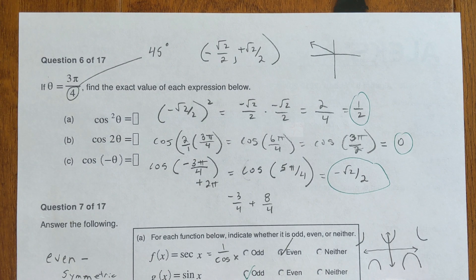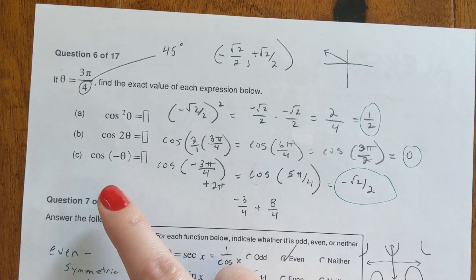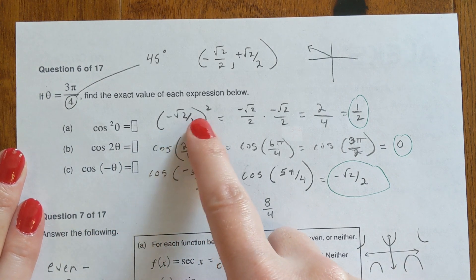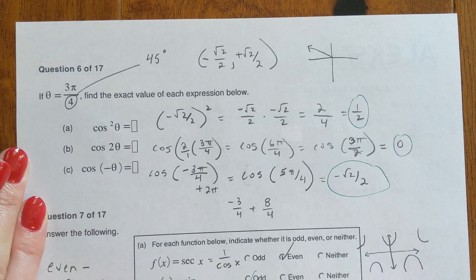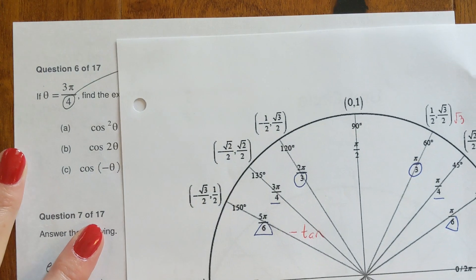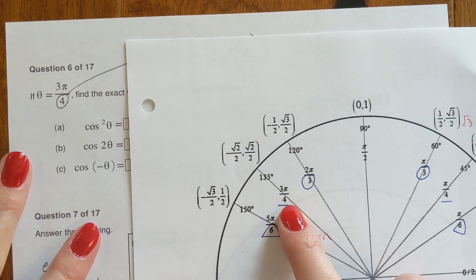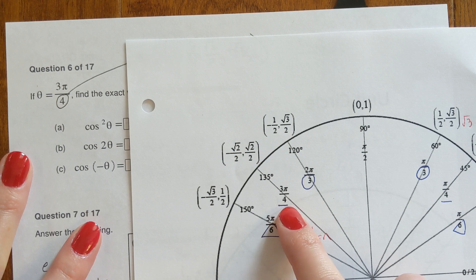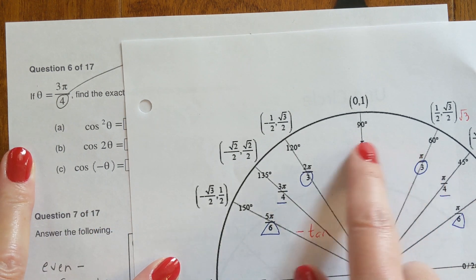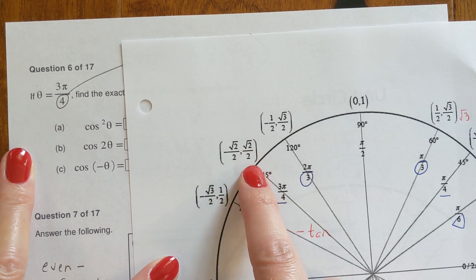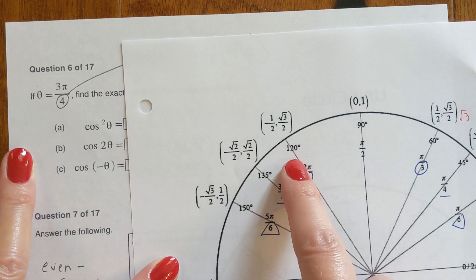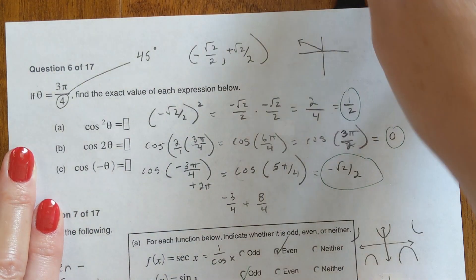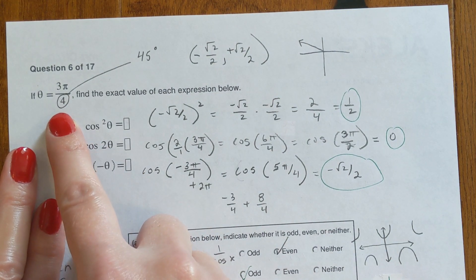This is part two of your unit circle homework on Alex. Number six asks you, given that theta is equal to three pi over four, find the exact value of each expression below. Knowing it's three pi over four, hopefully you memorized your unit circles. Since it's over four, it has to be a 45 degree angle. It's right there on your unit circle: negative radical two over two, radical two over two. That's because x is negative in this quadrant and y is positive.